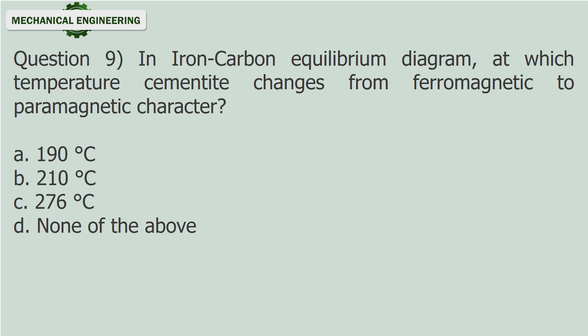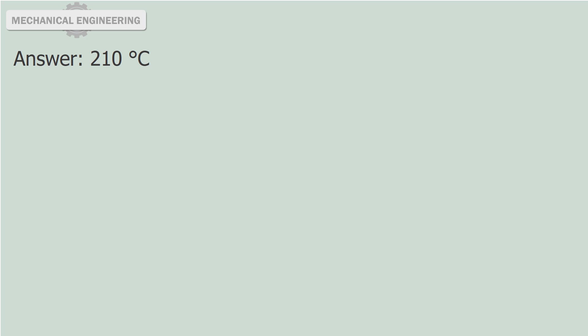Question 9: In the iron-carbon equilibrium diagram, at which temperature does cementite change from ferromagnetic to paramagnetic character? A. 190 degrees Celsius. B. 210 degrees Celsius. C. 276 degrees Celsius. D. None of the above. Answer: 210 degrees Celsius.